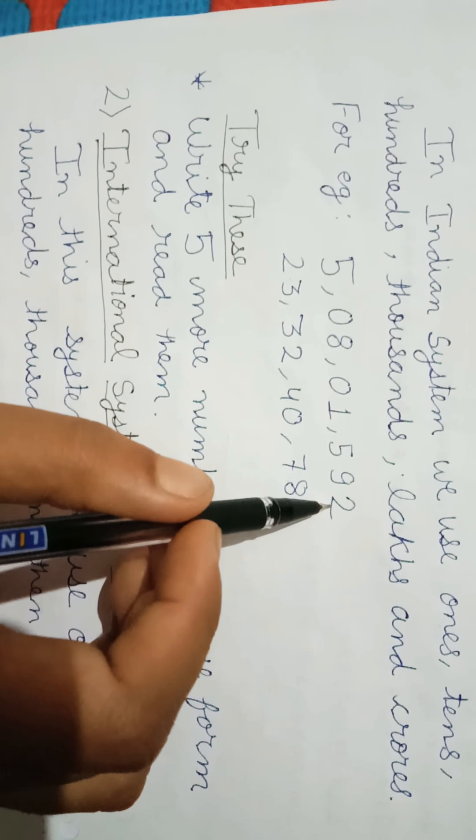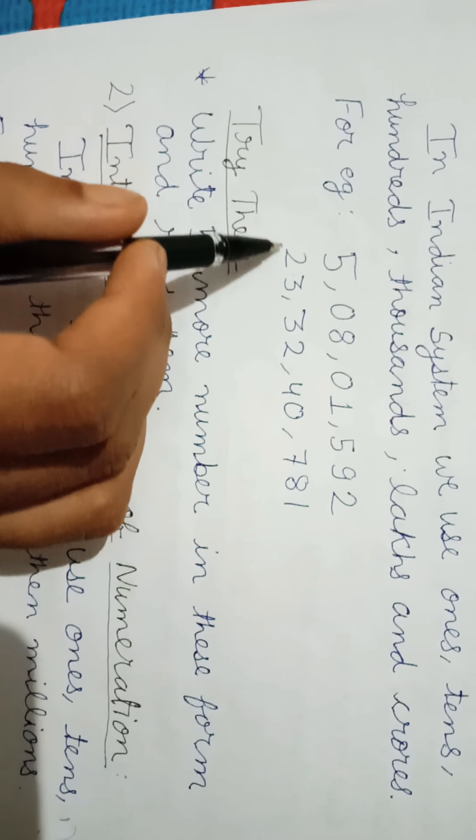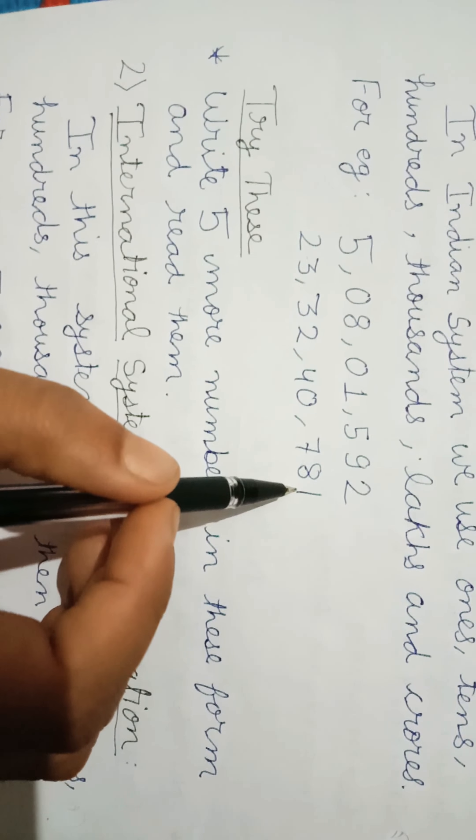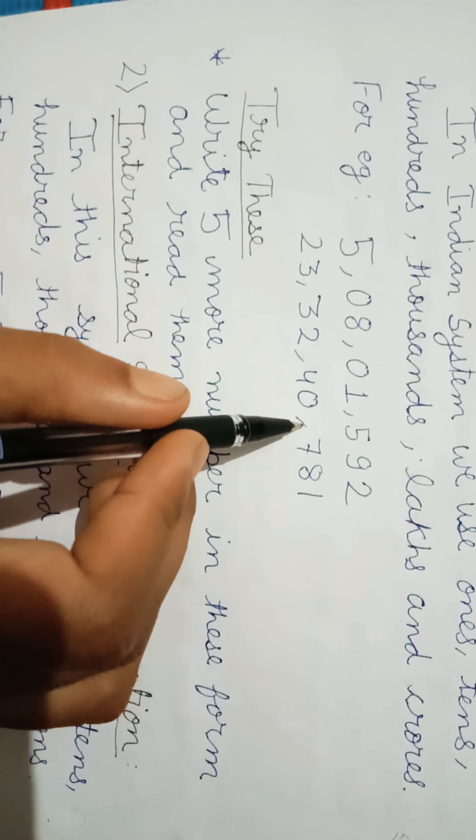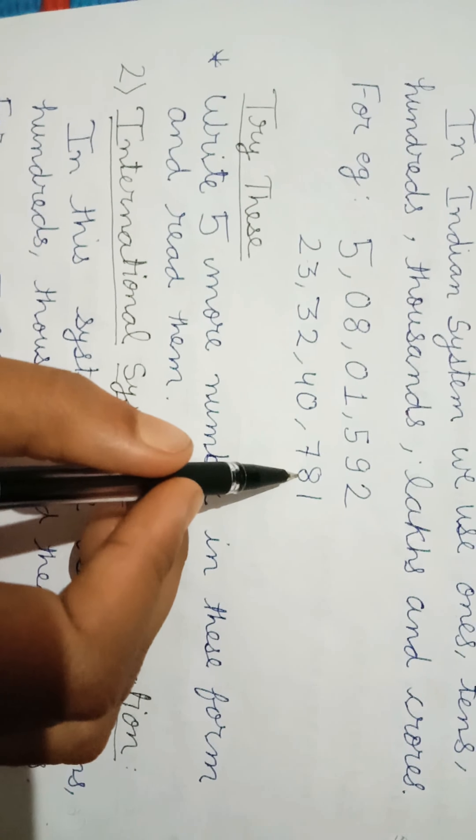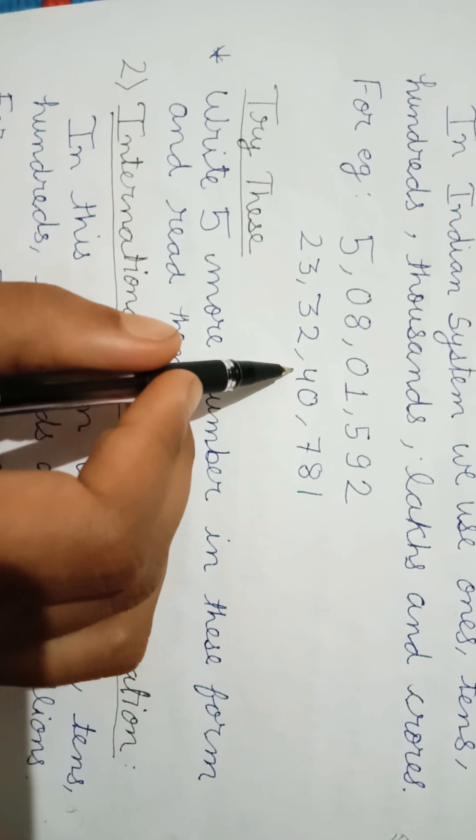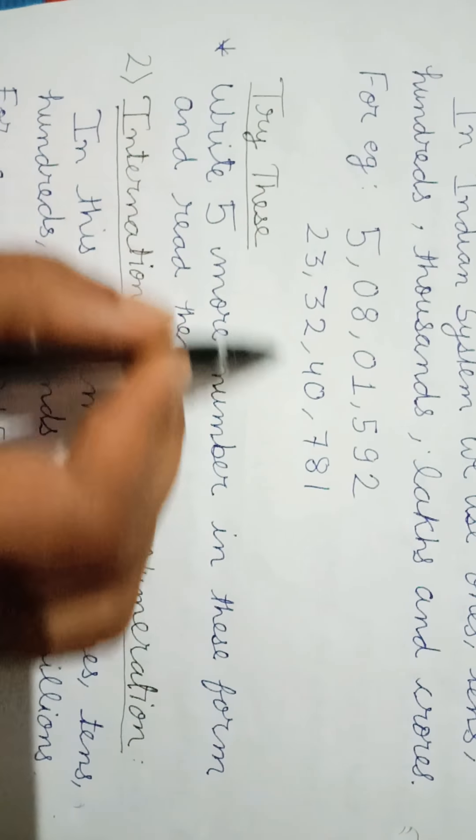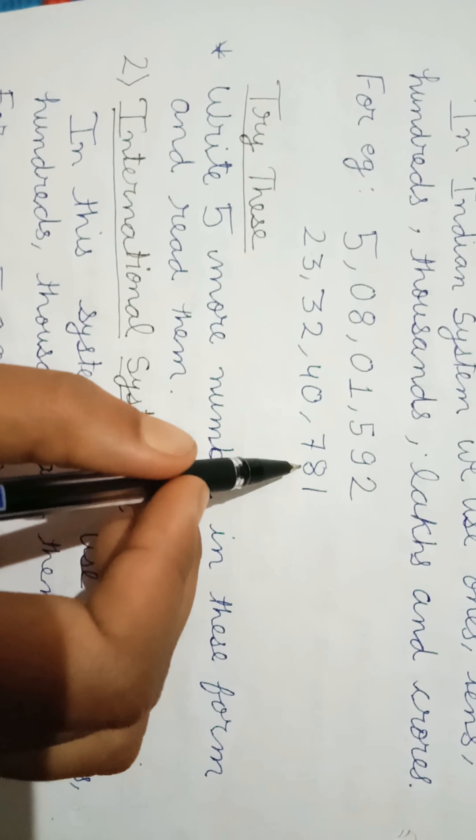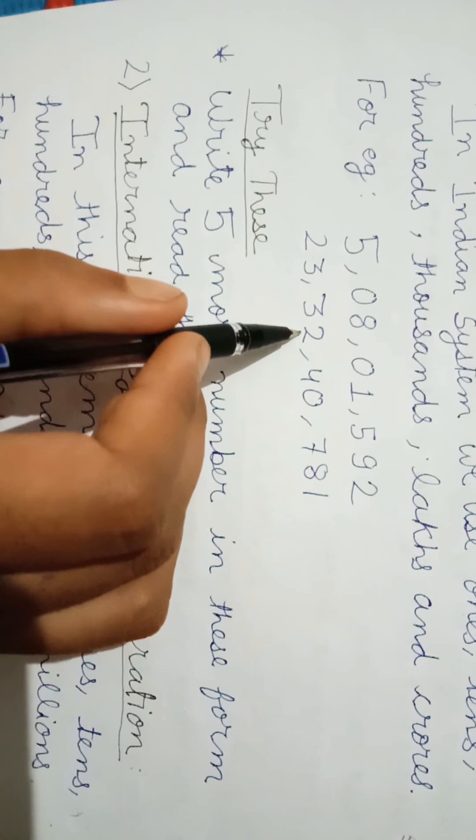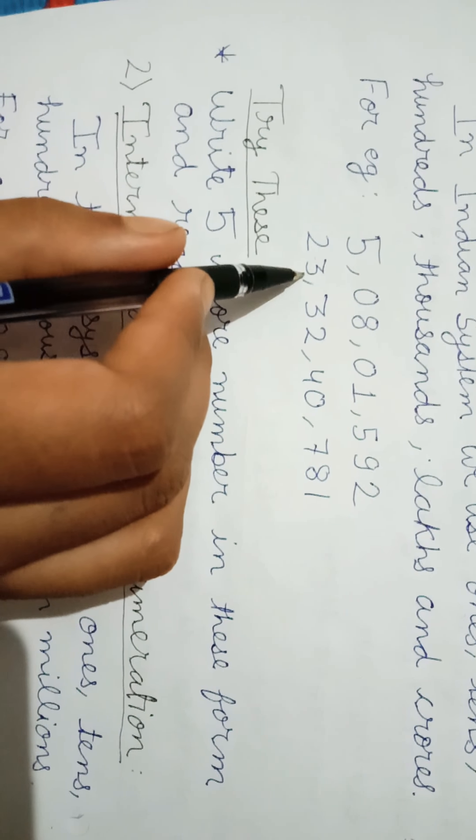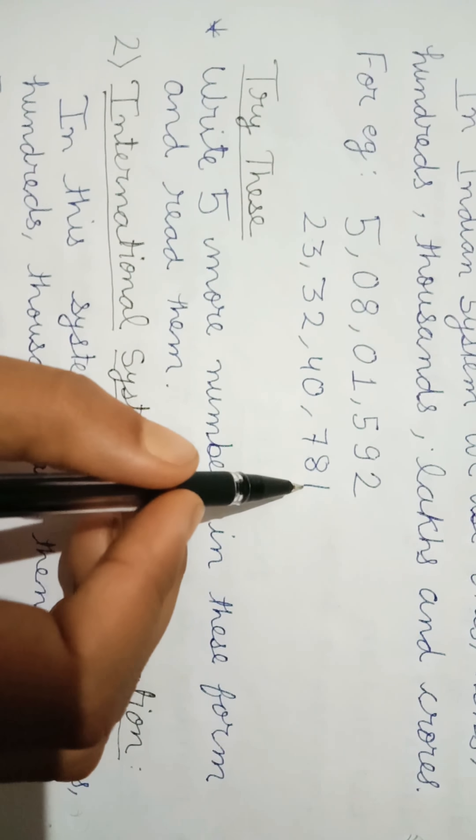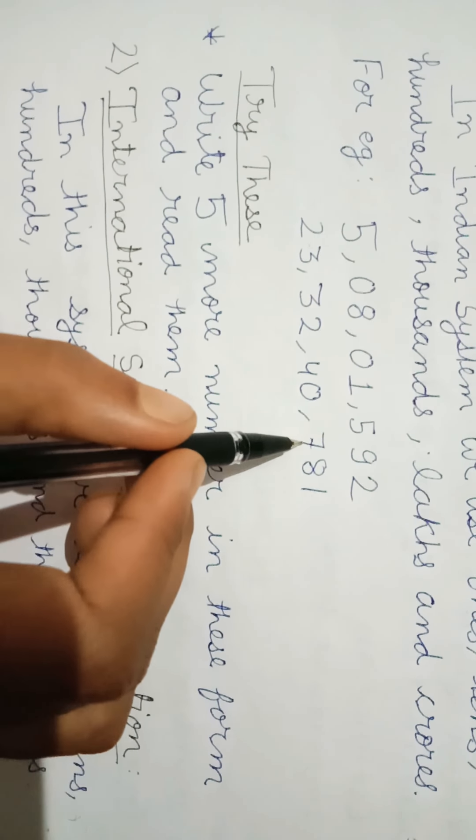Let's take another example, 233240781. We apply our first comma from the right side after 3 digits, then 2 digits, again 2 digits, again after 2 digits. It is read as ones, tens, hundreds, thousands, ten thousands, lakh, ten lakh, crore, ten crore. So it is 23 crore, 32 lakh, 40 thousand, 781.